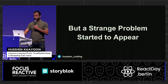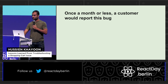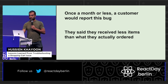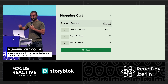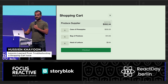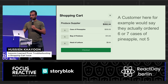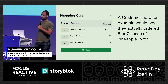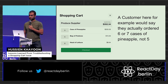But then we had a very strange problem appear. Once a month or less, a customer would report a specific bug — they said they received fewer items than what they actually ordered. You can see here five cases of pineapple, for example, is what they ordered. So a customer would say they actually got six or seven cases, not five. Very strange. Very bad.